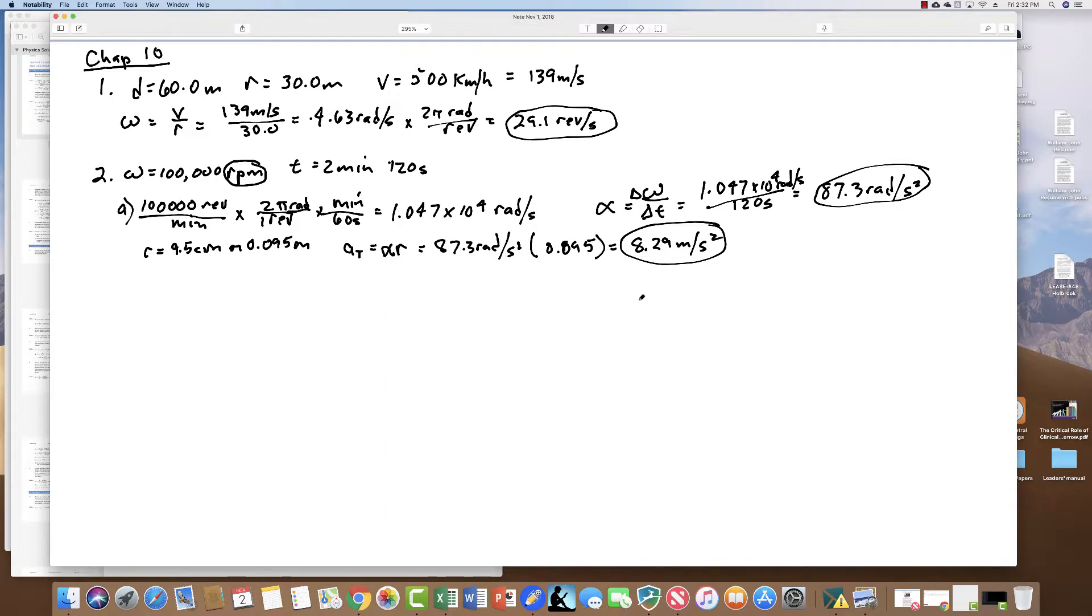The third question asks for the radial acceleration. The radial acceleration, if you look back through the book, is another word for centripetal acceleration - the acceleration directed toward the middle of the circle. You'll remember that equals v squared over r, which equals r squared omega squared over r, which is r omega squared.